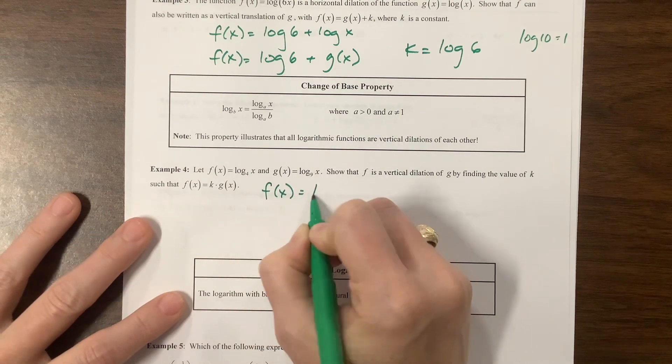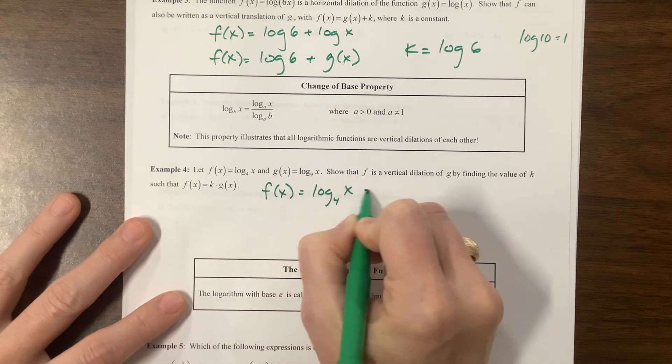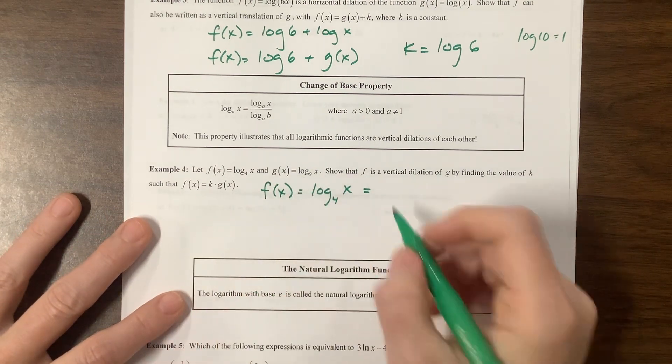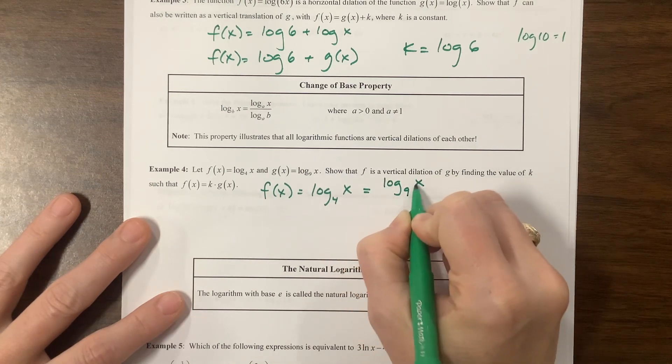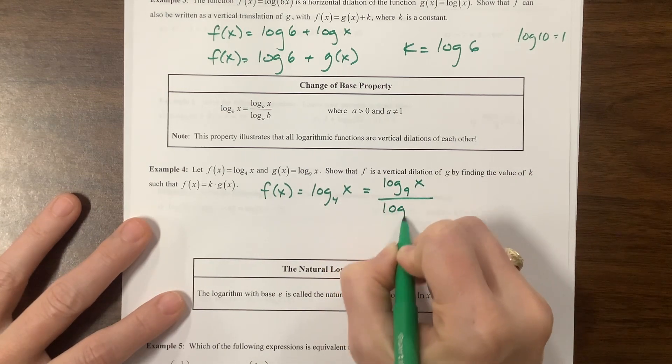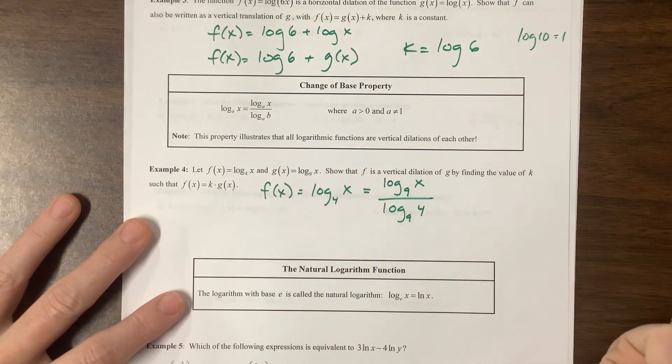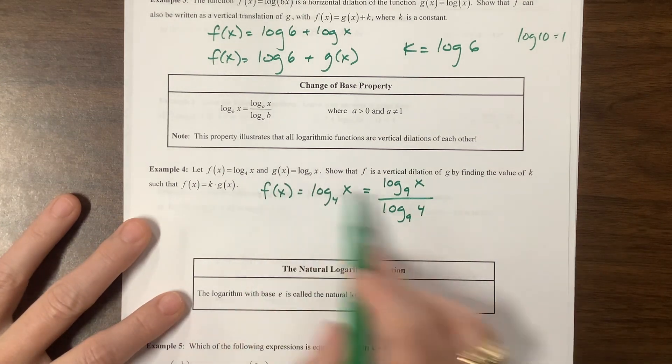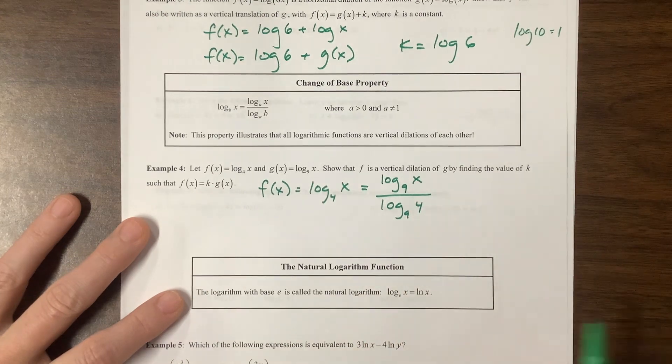f was equal to log base 4 of x. Well, notice g has log base 9. So what we can do is we can use the change of base using that base of 9. The 4 came down here, the x was on top, and then we changed it. We had the same base.